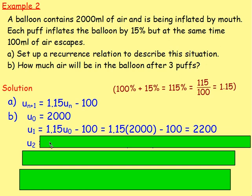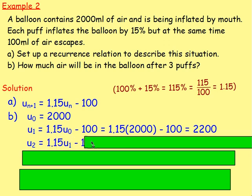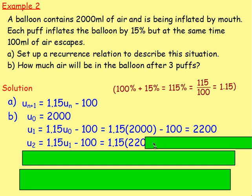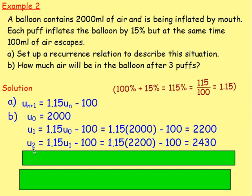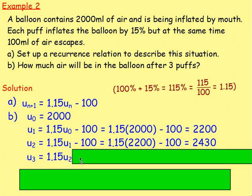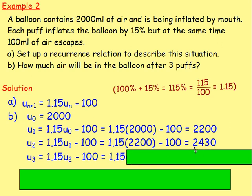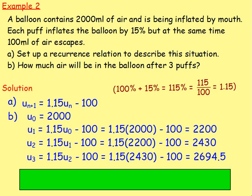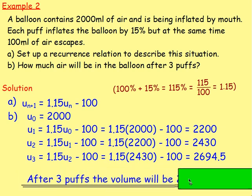For u2, it's 1.15 times the previous amount take away 100, so 1.15 times u1 take away 100. Substituting in, 1.15 times 2,200 take away 100 gives the amount after 2 puffs. For u3 — 3 puffs — again 1.15 times the previous amount take away 100, so 1.15 times u2 take away 100. U2 was 2,430, so 1.15 times 2,430 take away 100 gives us 2,694.5. Therefore, after 3 puffs, the volume will be 2,694.5 millilitres. Just remember your units.